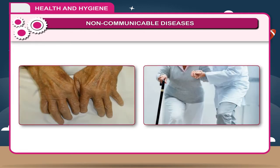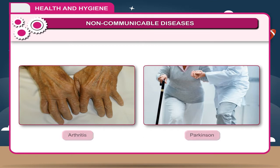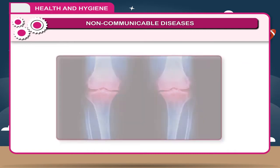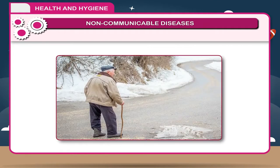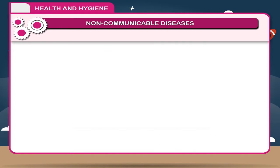Degenerative disorders, including arthritis and Parkinson's disease, involve the breakdown of tissues and loss of function of parts of the body. Joints gradually become stiff, bones become brittle, and blood vessels become blocked by the deposition of fat. The incidence of these problems increases with age.